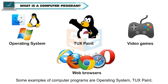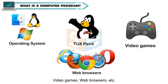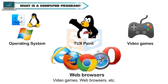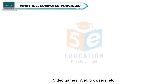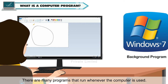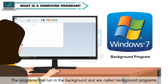Some examples of computer programs are operating system, TuxPaint, video games, web browsers, etc. There are many programs that run whenever the computer is used. These programs that run in the background are called background programs.